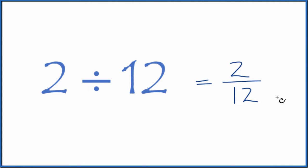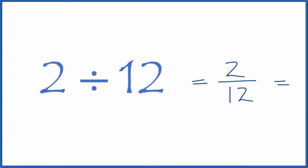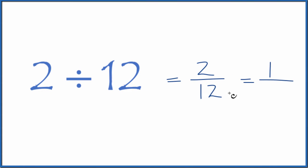We can simplify this since these are both even numbers. 2 divided by 2, that's 1, and 12 divided by 2, that's 6. So 2 divided by 12 equals the fraction 2 twelfths, or you can simplify that to 1 sixth.